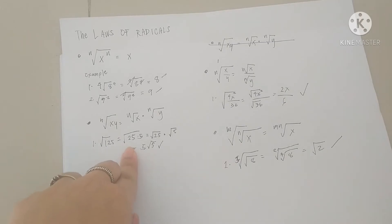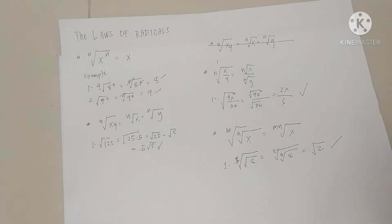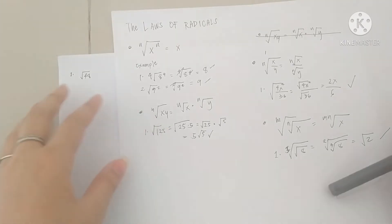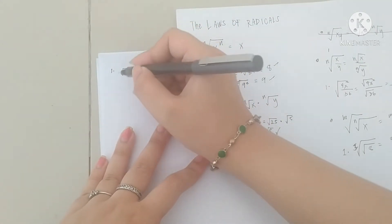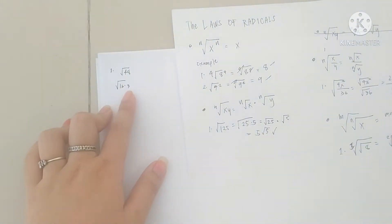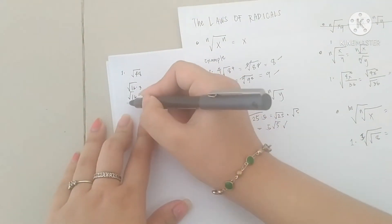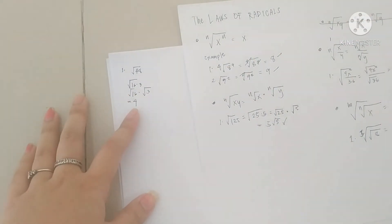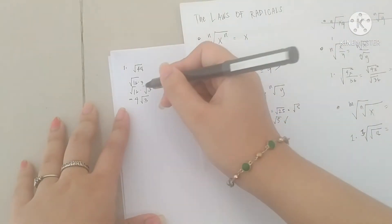We're going to use the laws of radicals — this is the product law. In the first example, we're going to use the product law. In square root of 48, we don't have a perfect square root for it, so we're going to factor it as square root of 16 times 3. 16 times 3 is 48. Now we're going to separate them: square root of 16 times square root of 3. Square root of 16 is 4, since 4 times 4 is 16. Square root of 3 doesn't have any root, so it will remain the same — we just copy it. Then 4√3 remains as our final answer.